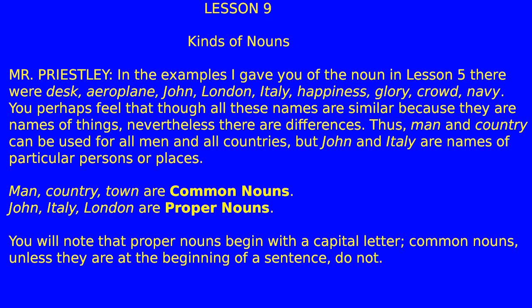Nevertheless there are differences. Thus, 'man' and 'country' can be used for all men and all countries, but 'John' and 'Italy' are names of particular persons or places. Man, country, town are common nouns; John, Italy, London are proper nouns. You will note that proper nouns begin with a capital letter; common nouns, unless they're at the beginning of a sentence, do not.